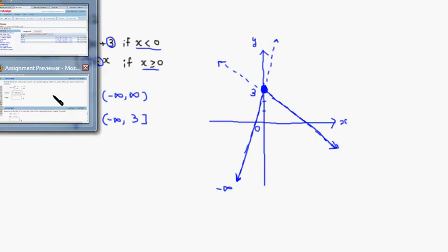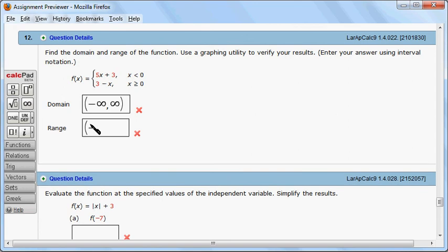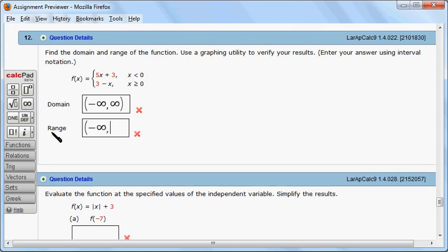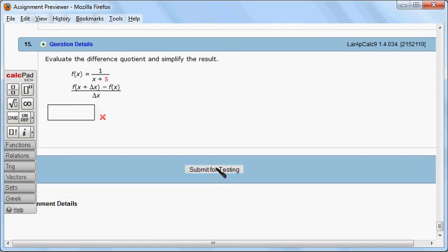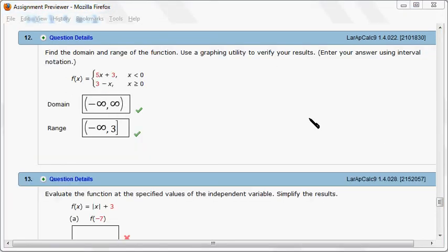Let's put that in. The range is going to be negative infinity, comma, three with a square bracket. Let me hit submit for testing and see what happens. Okay, it came back and looks like we did these correctly. That's it. I hope this was clear.